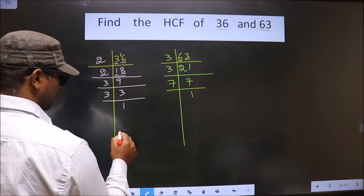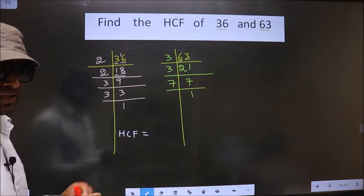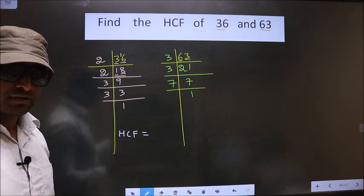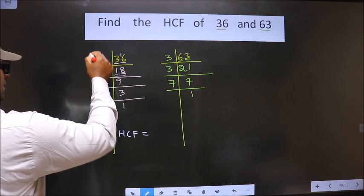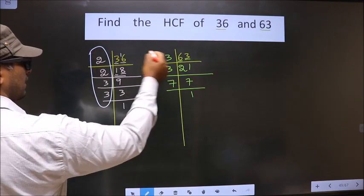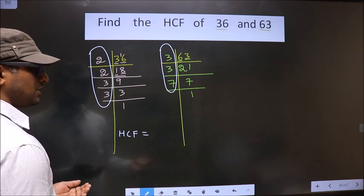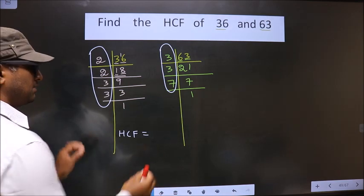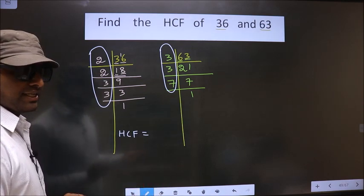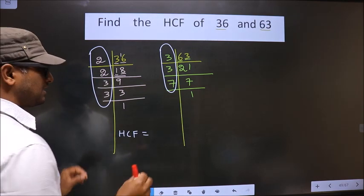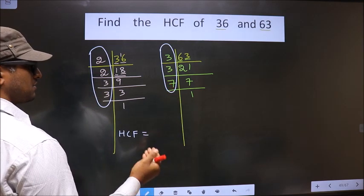So now our HCF is... HCF is the product of numbers that are present here and also here. Now we should find the numbers that are present in these two places. I repeat, we should find the numbers that are present in these two places. So let us find.